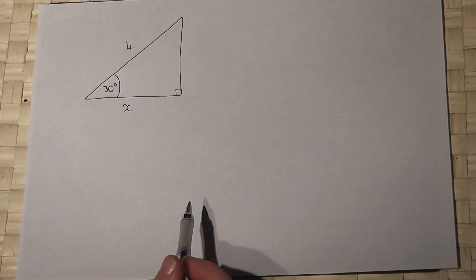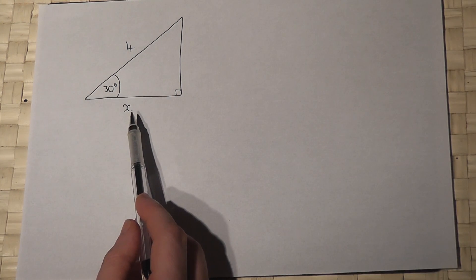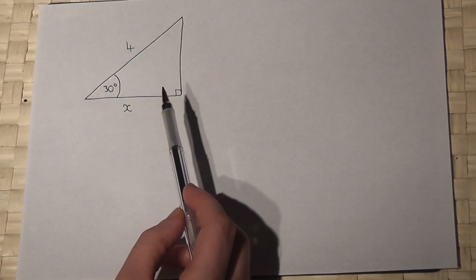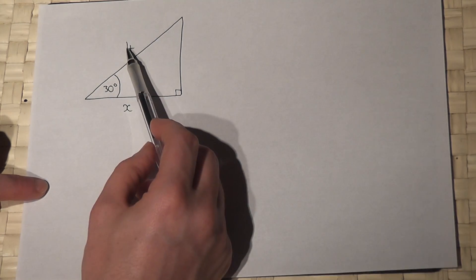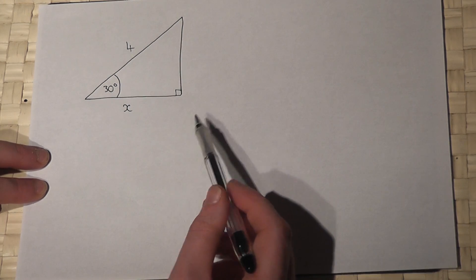In this video we review SOHCAHTOA to find a missing side. When we've got a right angle triangle we can label the sides that are given as either adjacent, opposite, or hypotenuse.